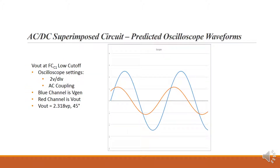At FC1, our low cutoff frequency, with the same 2 volts per division AC coupling settings, the blue channel is the generator and the red channel is the output. We can see 2.318 volts peak and the output is leading the generator by 45 degrees.